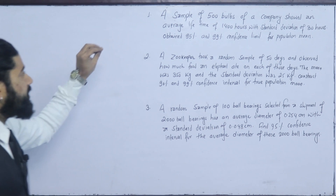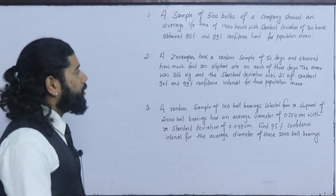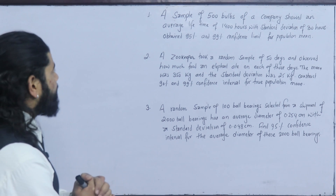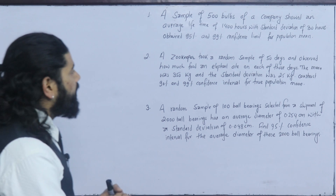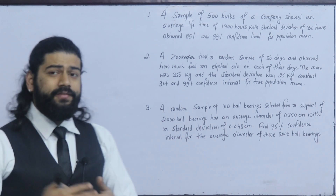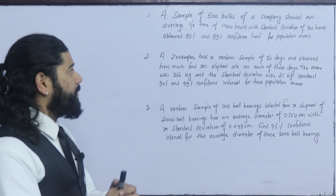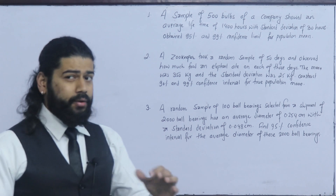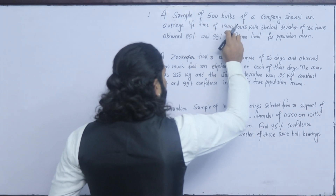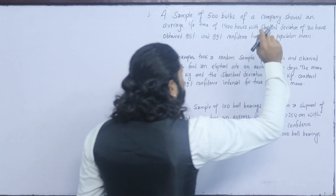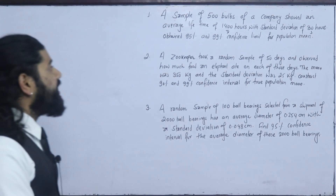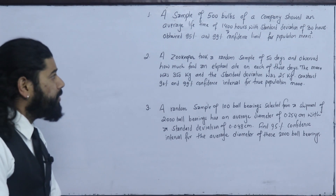The first question: a sample of 500 bulbs of a company showed an average lifetime of 1400 hours with a standard deviation of 30 hours. Obtain 95% and 99% confidence limits for the population mean. So the sample size is 500, the sample mean is 1400 hours, and the sample standard deviation is 30 hours.